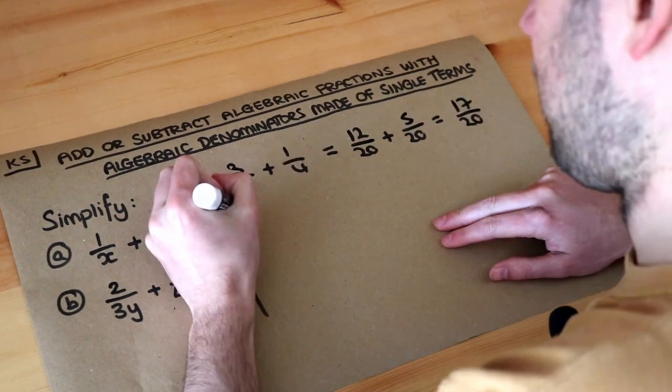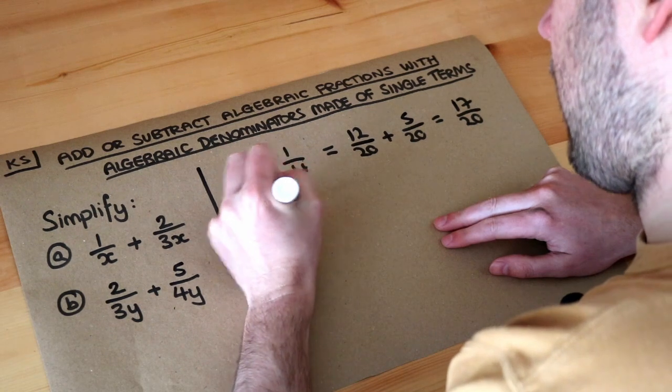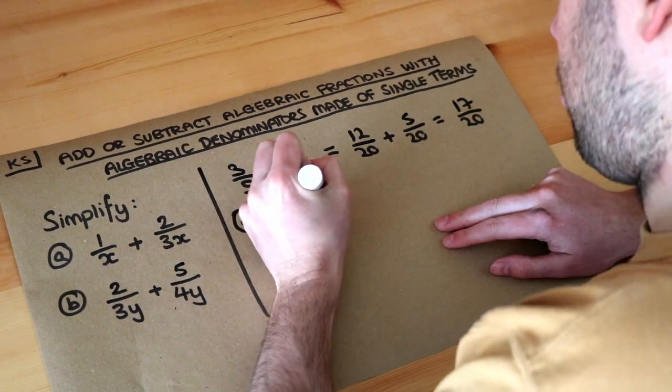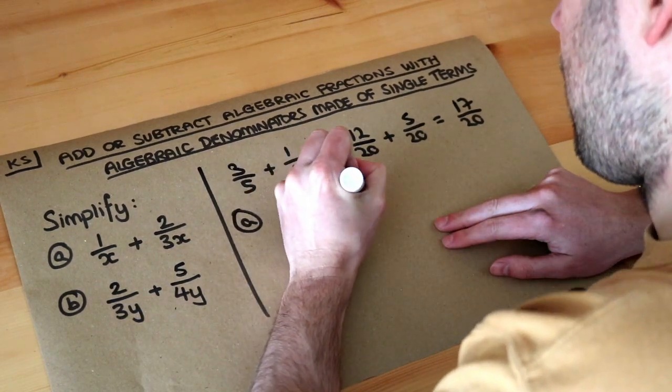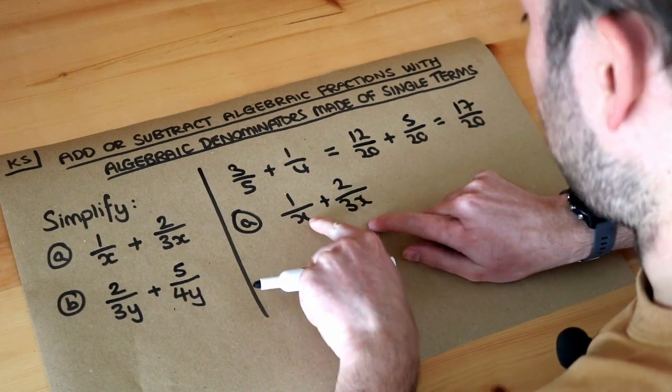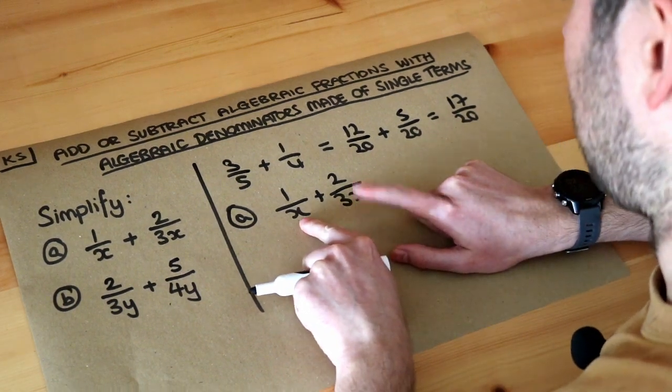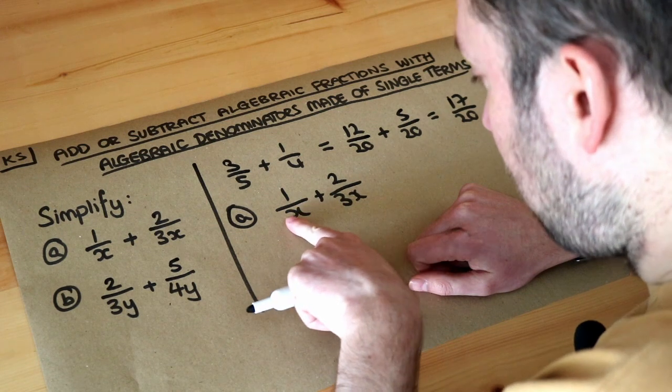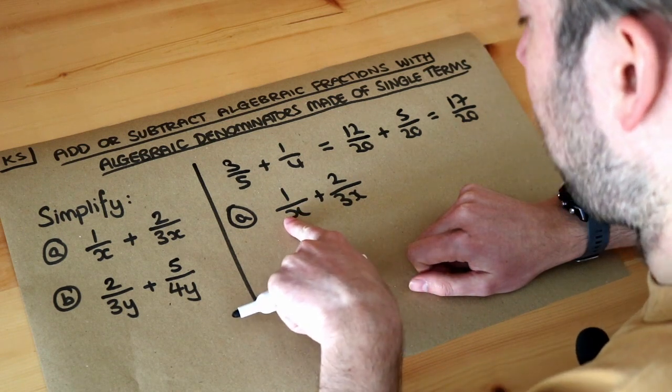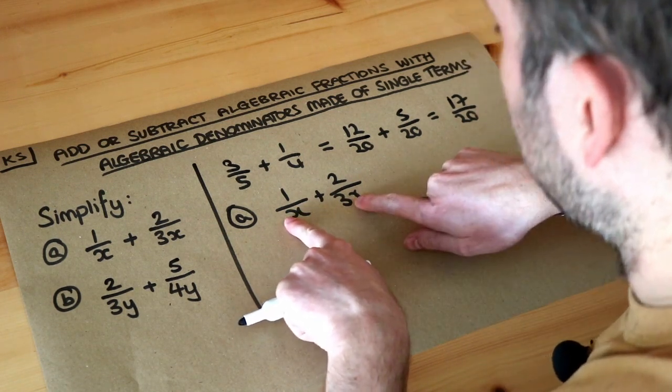The same principle applies here. For the first one we've got 1/x plus 2/3x. Is there something you could do to either or both these fractions to get the same denominator? Well, if you multiply the x by three you get 3x which would match this.